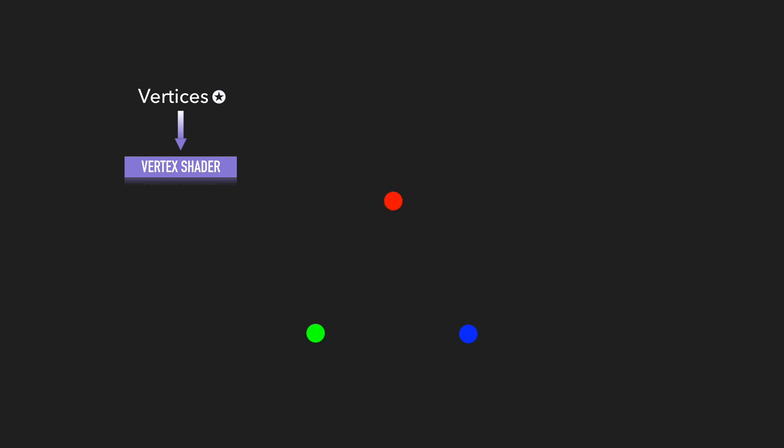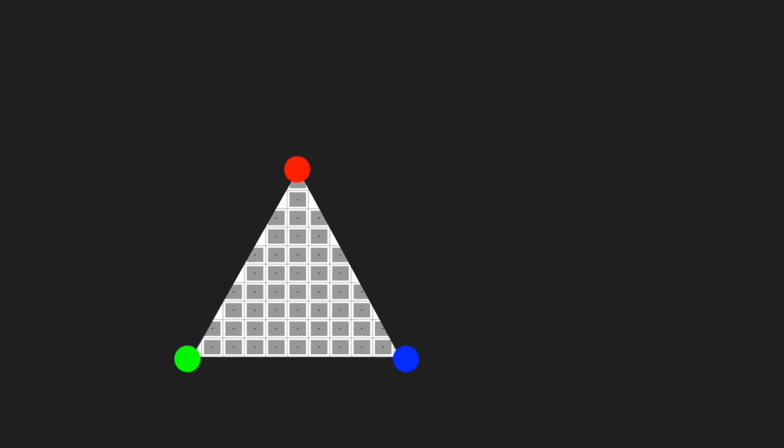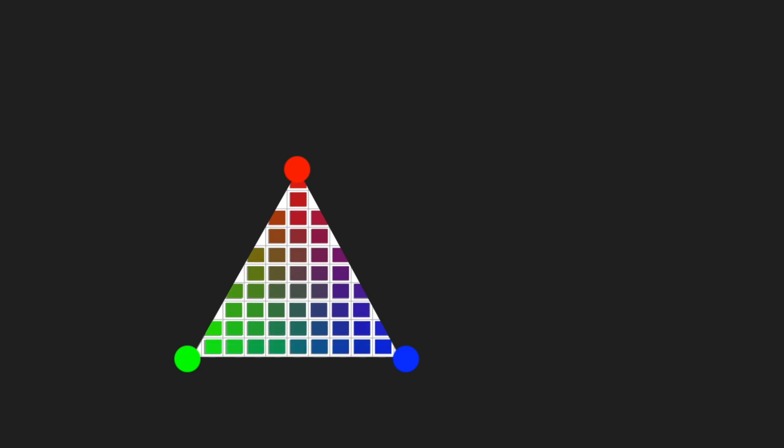Now we have these vertices in space, but there's no color or shape attached to them. We need to use the rasterizer. This is a fixed function pipeline, meaning we can't update it. The vertex shader passes all the data into the rasterizer. What the rasterizer does is figure out what pixels are around this triangle. Any fragment — that's the gray spot with the black dot you see — that lies within the triangle and has its center inside will be drawn a color. A fragment is basically a colorless pixel at this point.